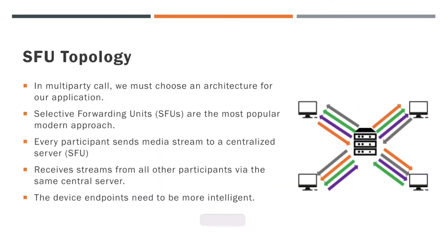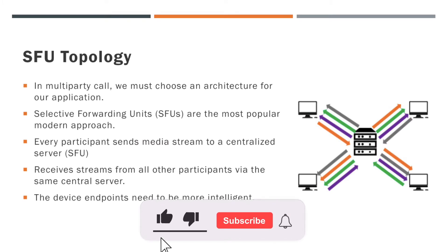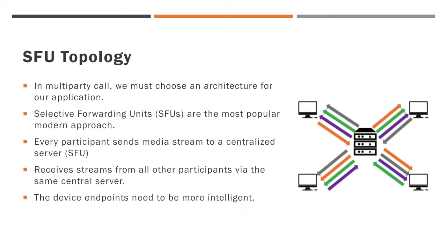We already know that in a multi-party call, we must choose an architecture for our application. This is because how the users are arranged will play an important role in the conference call. A topology refers to the layout of a computer network.